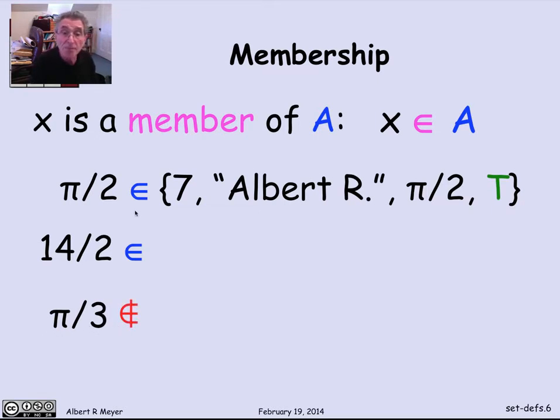On the other hand, pi over 3 is a number that's simply not in that set. So I'm using the epsilon with a vertical bar through it, or some kind of a line through it to mean not a member of.